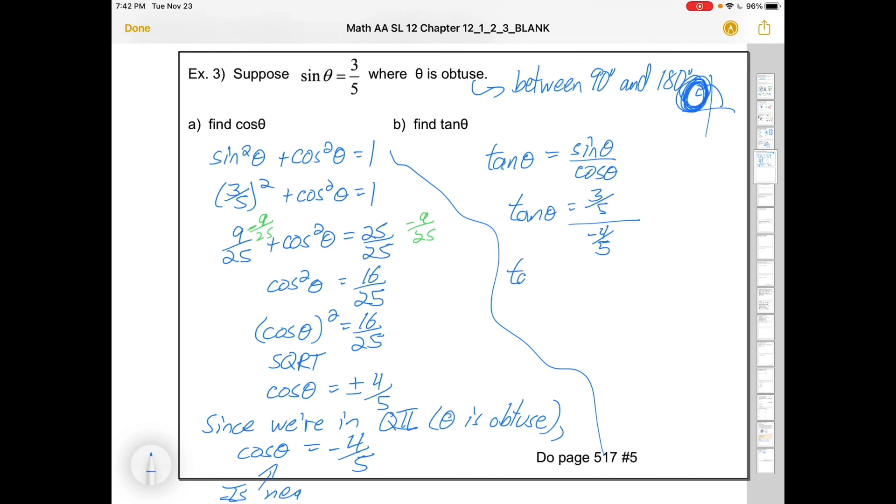Now remember how we divide fractions. We flip and multiply. It is a property, though, that if they both have the same denominator, they're just going to divide out. And that's going to give us, these fives will divide out. It's going to give us negative three quarters.